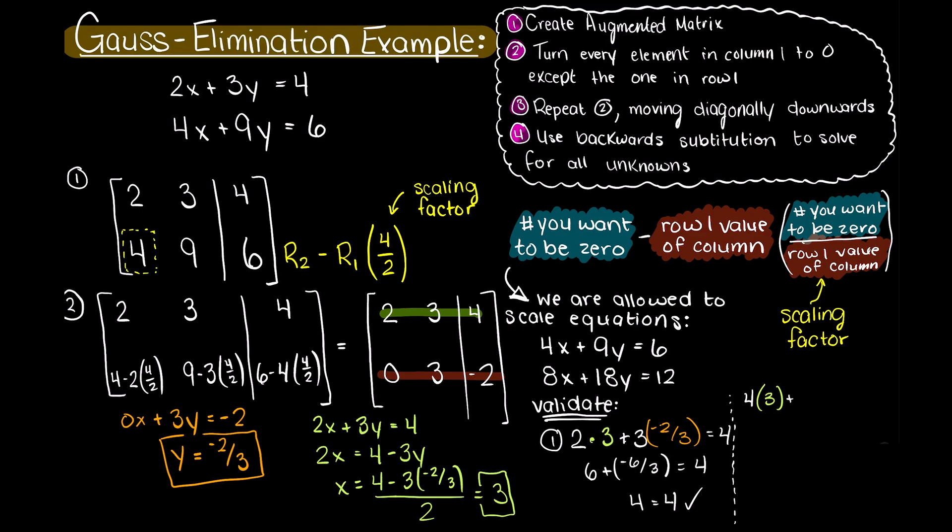Next, we have 4 times 3 plus 9 times minus 2 over 3 equals 6. Therefore, 4 times 3 is 12 minus 6 is 6, and our variables also make sense for equation 2.